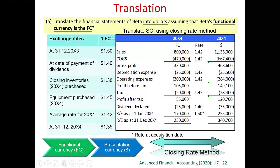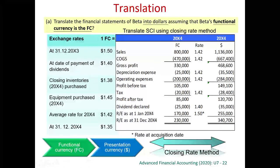If Beta's functional currency is FC, any translation from FC to dollar is a translation from the functional currency to presentation currency. As we have said before, translation from the functional currency to presentation currency uses the closing rate method. Therefore, all assets and liabilities will be translated using the closing rate. For income statement items, we may use the actual rate, but if we have many transactions, we can use the average rate to approximate.